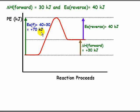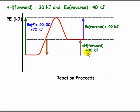For delta H reverse, we go from the products down to the reactants. If delta H forward is positive 30, then delta H reverse would be negative 30 kilojoules.